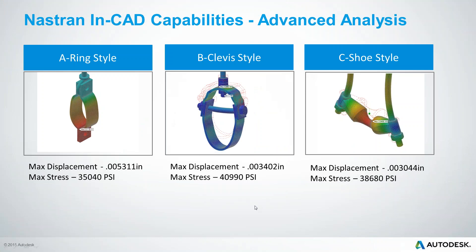Summarizing the comparison: the ring-style design has a lot of displacement — probably not the design we'd want to use. With the shoe style, thermal displacement is much less and overall displacement is lower. With the clevis design, stress is more distributed throughout the component but maximum stresses at the fastener mounting locations are a bit higher. These analyses let us visualize where thermal loading will go and how it will affect our components in a real-world scenario.